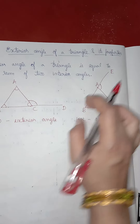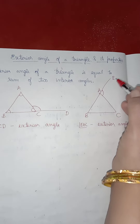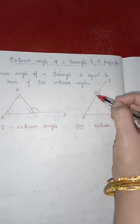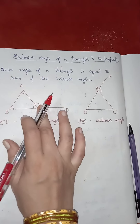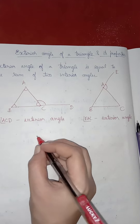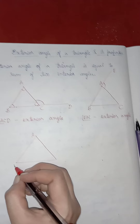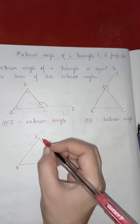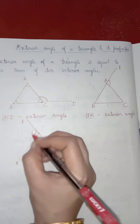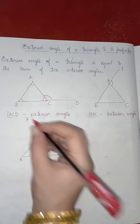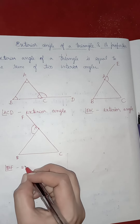Whichever side you extend outside the triangle to another point, the angle formed between the extended side and the opposite side will be the exterior angle. If you extend side A, C till point F, then angle B, A, F is the exterior angle.